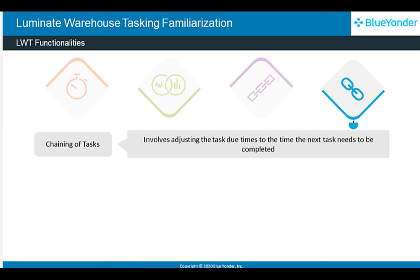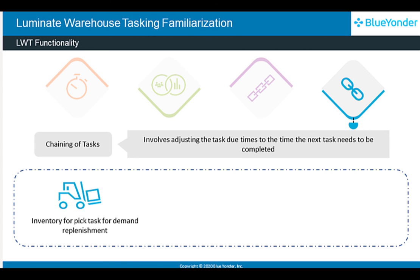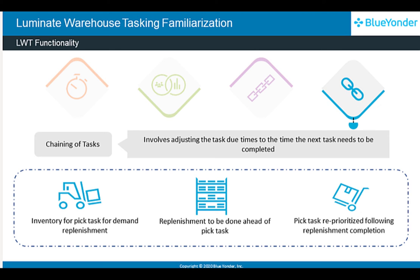Task chaining involves adjusting the task due times to the time the next task needs to be completed. For example, in case of demand replenishment or PIA tasks that include case picks associated with them, LWT prioritizes demand replenishment tasks. This helps complete replenishments over case picks and chain tasks accordingly.